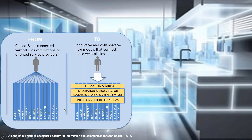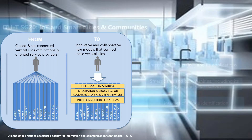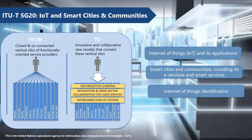ITU is the United Nations specialized agency for information and communication technologies. The motivation for ITU-T Study Group 20 is to lead the study of developing recommendations, reports, handbooks, and guidelines about IoT and smart cities and communities. The target is to collect requirements and use cases from closed and unconnected vertical silos or functionality between different service providers, and try to figure out the common part in order to provide standardization and provide innovative and collaborative new models that connect these vertical silos.